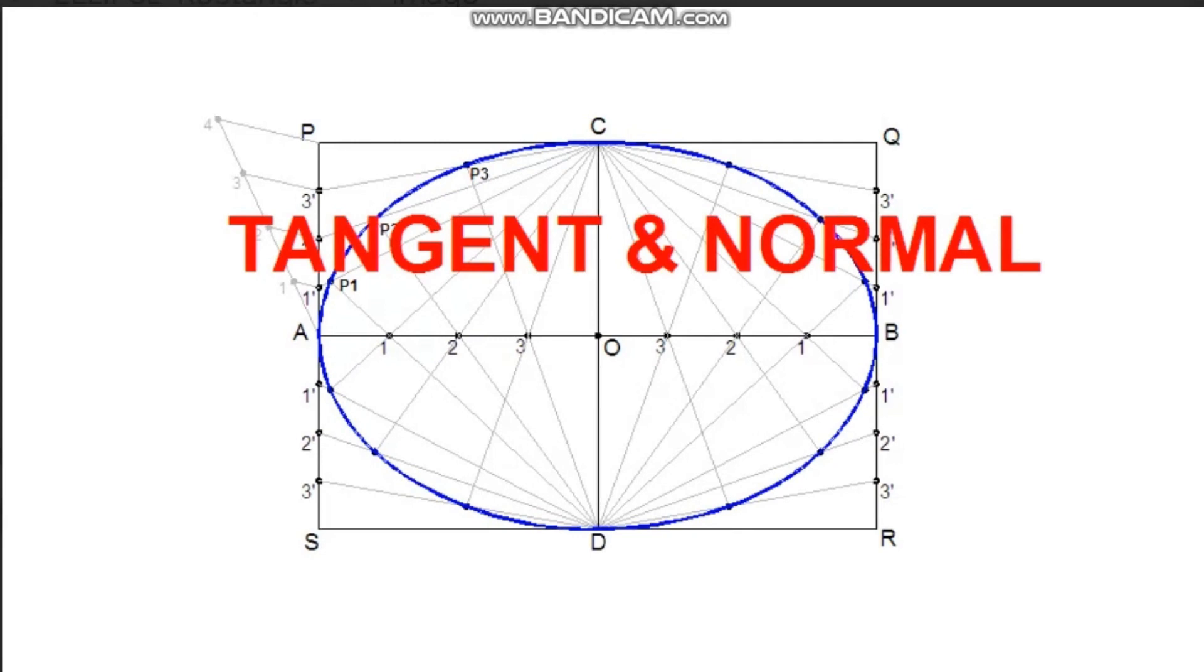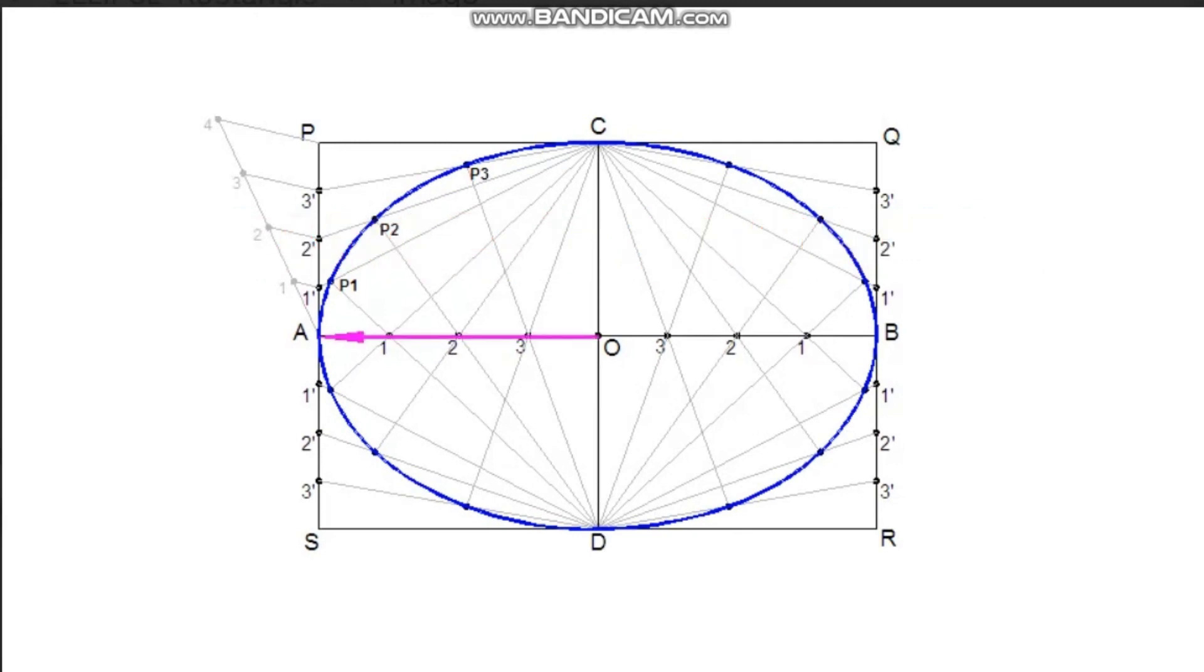To draw tangent and normal, find out the focus points F1 and F2. Measure half of the major axis. From the end of the minor axis as center, cut arcs on the major axis. These points on the major axis are foci of the ellipse, F1 and F2.